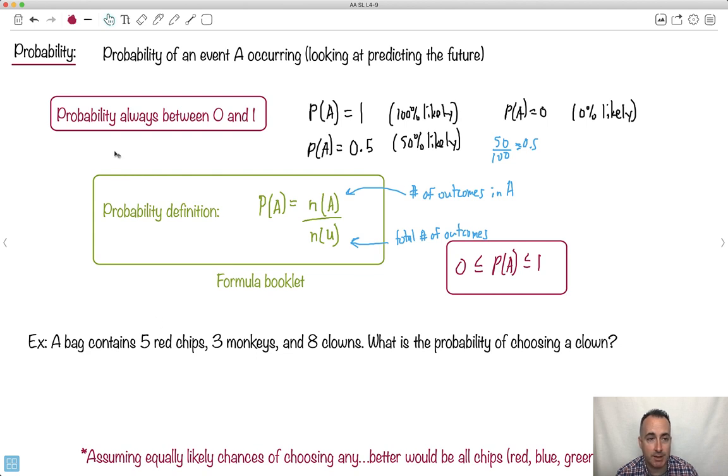So let's do an example. Now the examples are always really boring with like, there's a bag with a bunch of chips or a bunch of different things in there. I just figured, okay, five red chips, three monkeys, eight clowns. I don't know why this bag is there. We have to assume that it's going to be equally likely chances. Better would be to make them all chips or red, green, blue, whatever. But let's just say a bag contains five red little pieces, three monkeys and eight clowns. What's the probability of choosing a clown? It's a bit of a ridiculous example because if you're actually choosing, you'll probably feel the clown. But let's just assume you're just picking randomly.